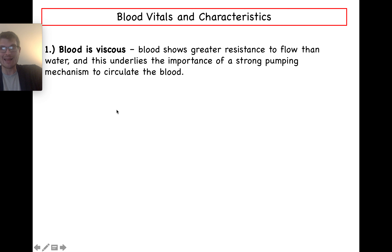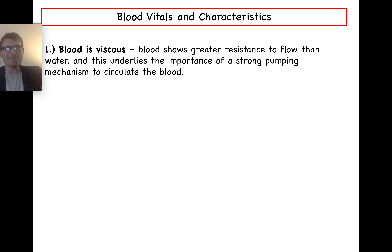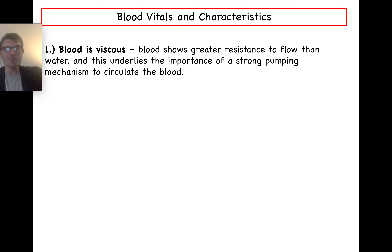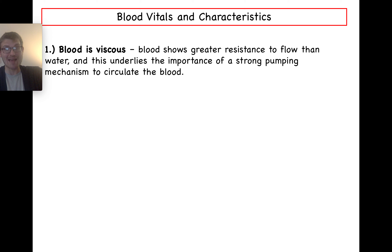A couple of characteristics of blood: blood is viscous. Something that is viscous has a resistance to flow. Water is not very viscous — tip a glass and it comes straight out. But honey or syrup pours out very slowly. Blood is a lot more like syrup than water, showing this resistance to flow. This will underlie, as we'll talk about in chapter 19, the importance of having a strong heart pumping mechanism, because blood isn't going to be easy to pump around.